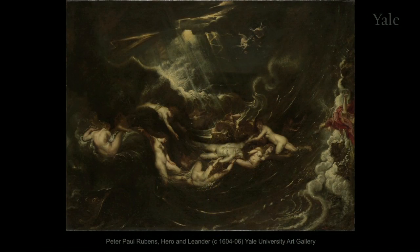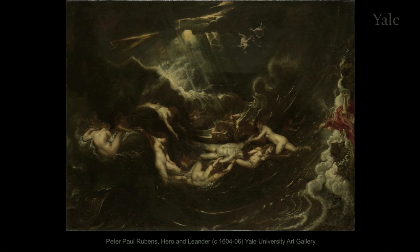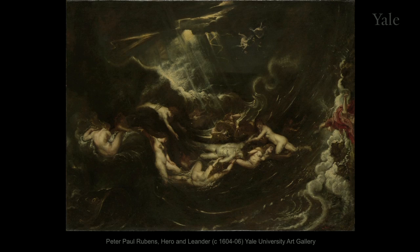In the last lecture, we saw Rubens painting a story from Greek mythology, as told in Roman times, a story about illicit love — an illicit affair that went against nature in a Stoic way of thinking and was punished by nature itself. Rubens had traveled to Rome, like every artist we've considered so far, to learn from its ancient and modern wonders and to be changed by them.